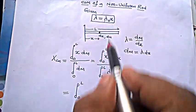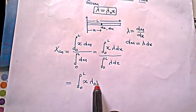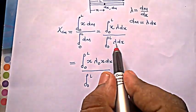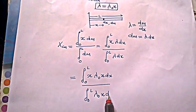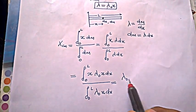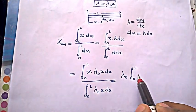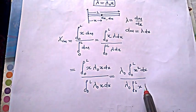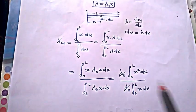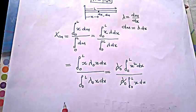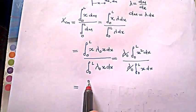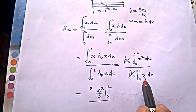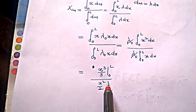So the numerator becomes the integral from 0 to L of x times lambda naught times x dx, and the denominator is the integral from 0 to L of lambda naught times x dx. Taking lambda naught outside, it appears in both and cancels. The numerator gives the integral of x squared, which is x cubed over 3, from 0 to L.